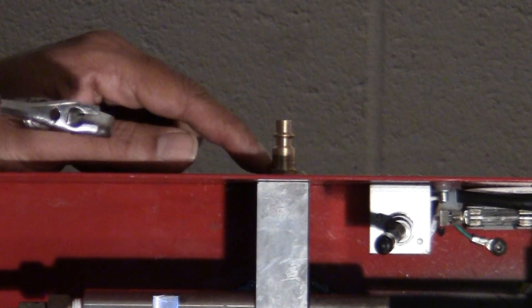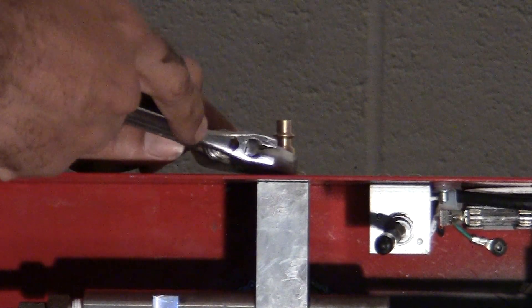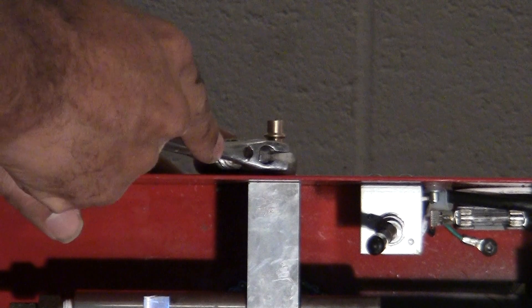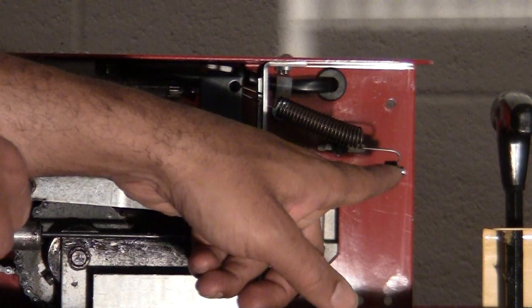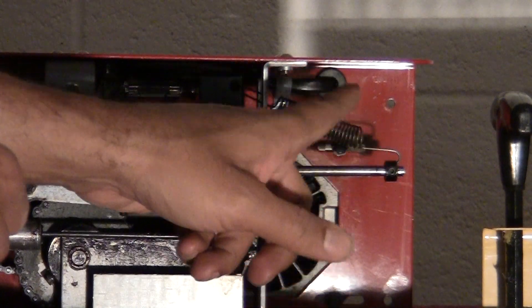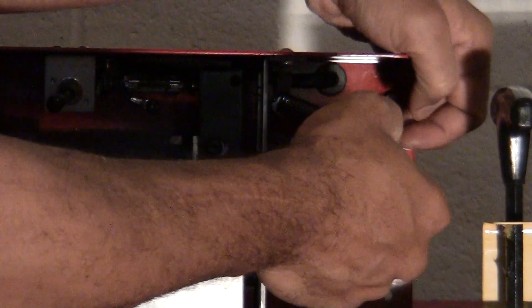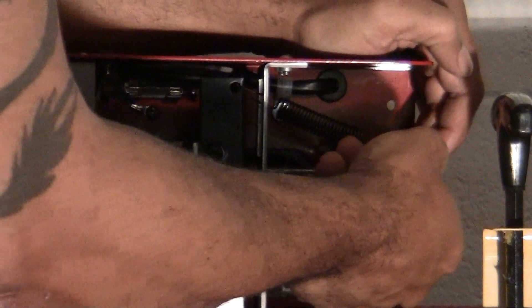Alright, next up I'm just going to remove the male quick connect from the low pressure side out of the cylinder block. Next up I want to remove the tension spring here. So get your proper allen and remove this.